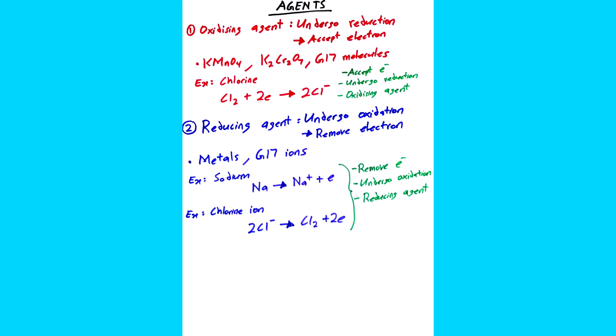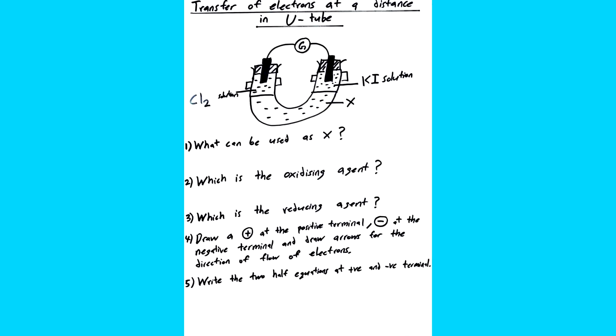Look at the difference between group 17 molecules and group 17 ions. One accepts electrons and one removes electron. Do not confuse these two and be very clear. I've got another question for you guys. It's from transfer of electrons at a distance in YouTube. It's quite a long one, but question in paper 2 section A will be something like this but even longer. As usual, pause the video, try to answer all the questions and then click play to watch my explanation.